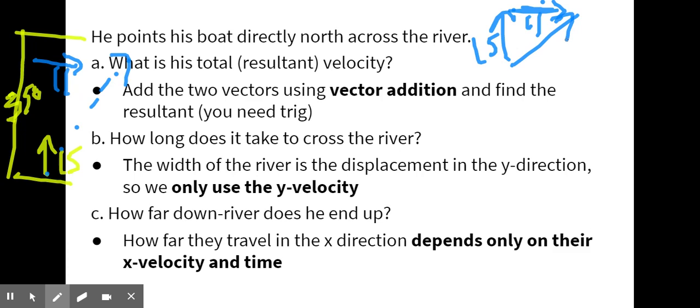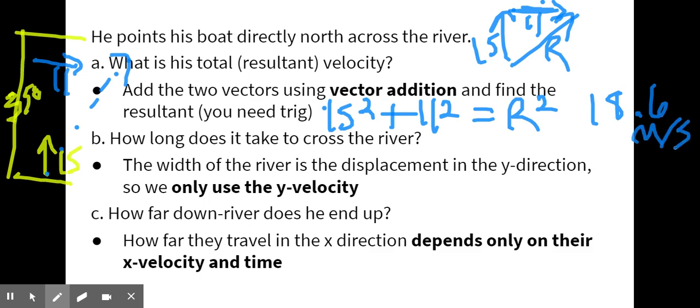So that's going to be 15 squared plus 11 squared is equal to call it r squared. So it's our resultant. And so if you take the square root of 15 squared plus 11 squared, you should get 18.6 meters per second. But remember that's just a speed. That is not a velocity, because it doesn't have direction. So we need to use some trig to find direction.